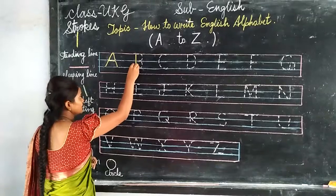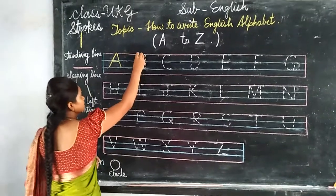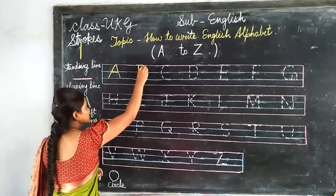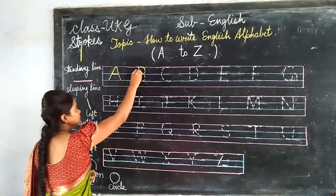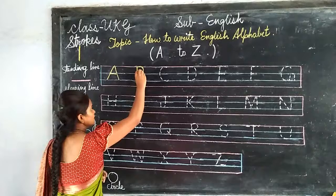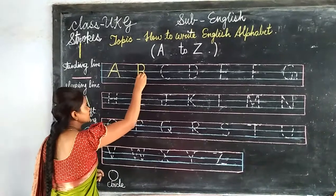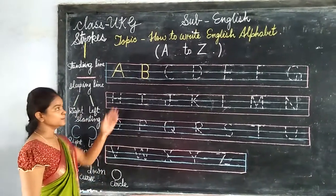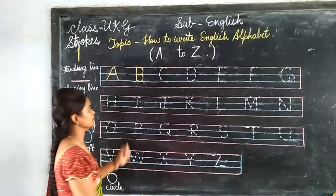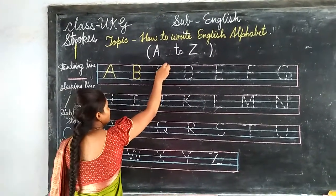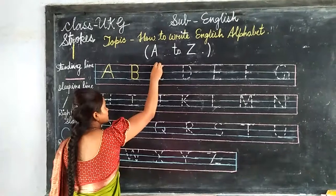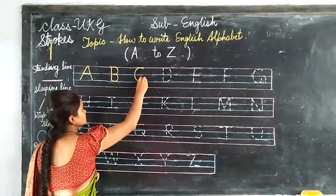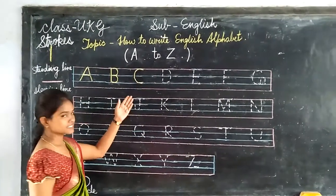Standing line, left curve, and another left curve. B. Big right curve. C.